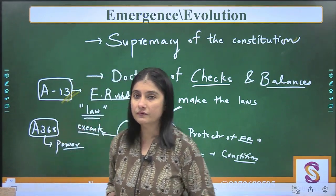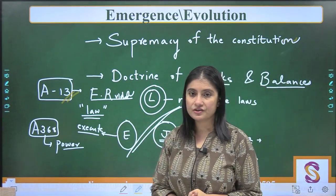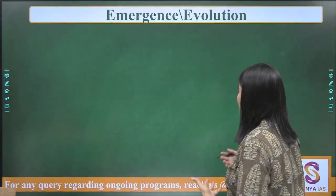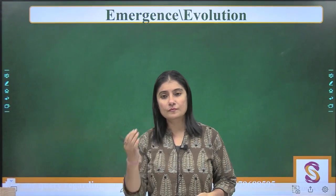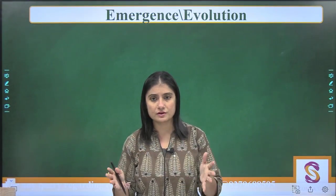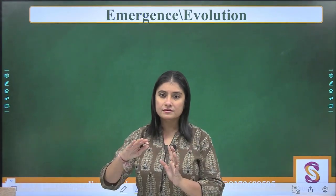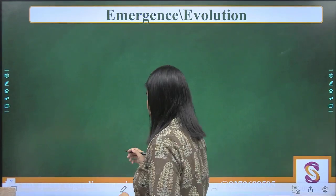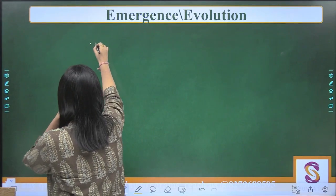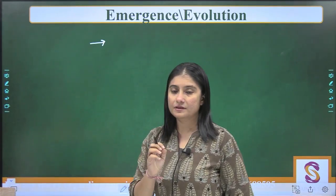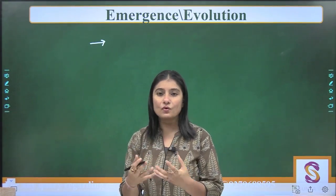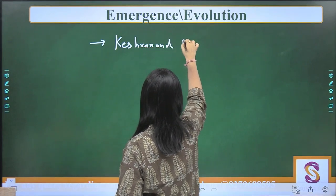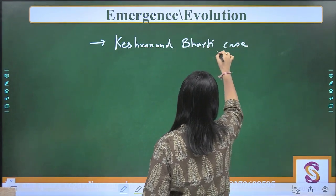Now we will understand the evolution. The usual process is: the legislature makes a law, someone approaches the judiciary saying their fundamental rights are infringed because of a certain change in the constitution, and then the judiciary decides whether that change is constitutional or must be declared null and void. The basic structure doctrine was first explicitly invoked in the Keshavananda Bharati case.